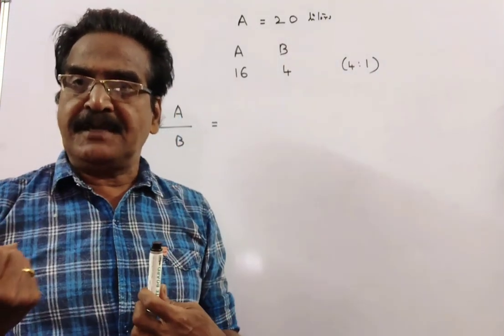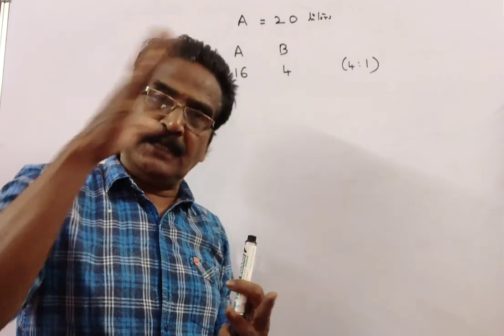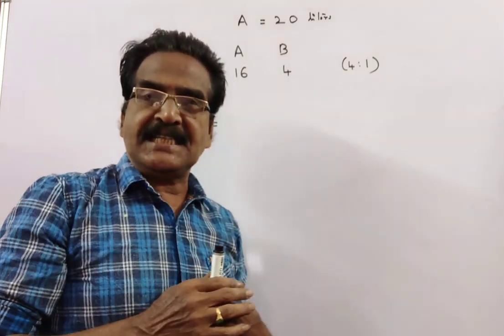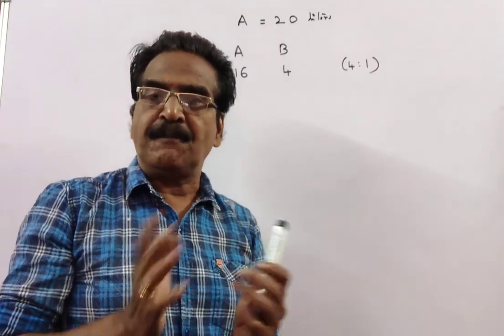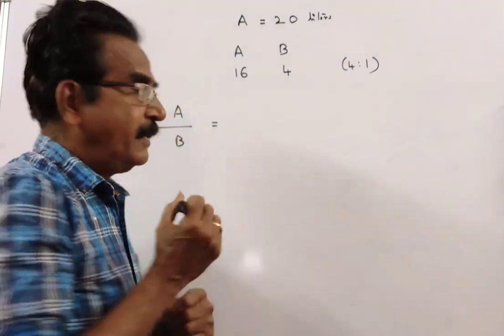Now 4 liters of mixture is taken out and 4 liters of liquid B is added. Now let us see the respective positions of A and B in the final mixture.